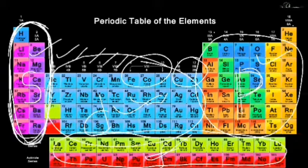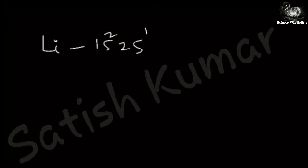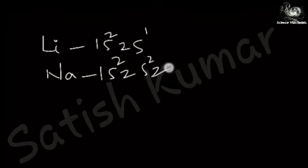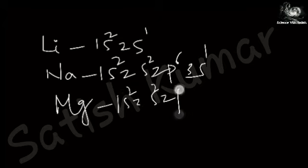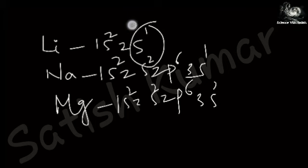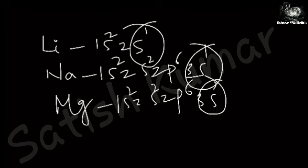Why are they called s-block, p-block, d-block, and f-block? If you write the electronic configurations of elements in groups 1A and 2A, the last electron always enters an s orbital. For example, lithium (atomic number 3) is 1s², 2s¹ — the last electron is in s orbital. Sodium is 1s², 2s², 2p⁶, 3s¹ — again s orbital. So these are called s-block elements.